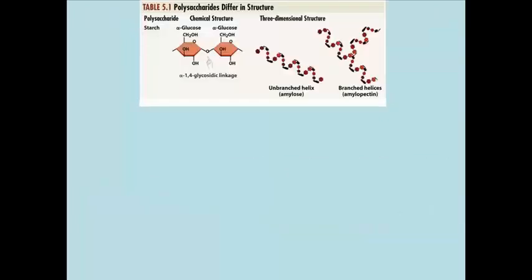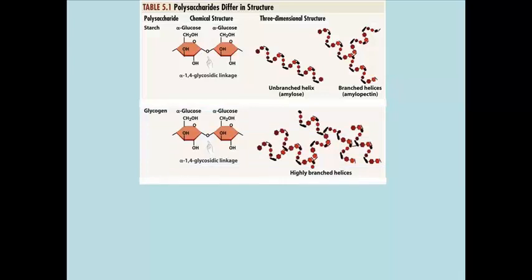Take a quick look at the difference in structure between storage and structural polysaccharides. Starch is made up of unbranched alpha 1,4 glycoside-linked glucose polysaccharides called amylose, and a branched glucose polysaccharide called amylopectin. Glycogen in animal cells is just a more highly branched polysaccharide of alpha-linked glucose molecules.